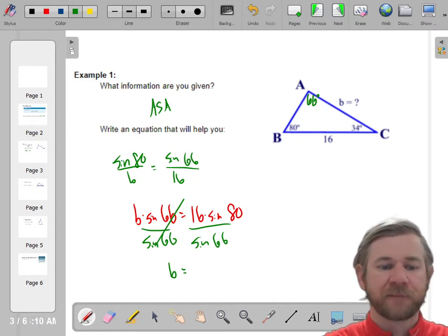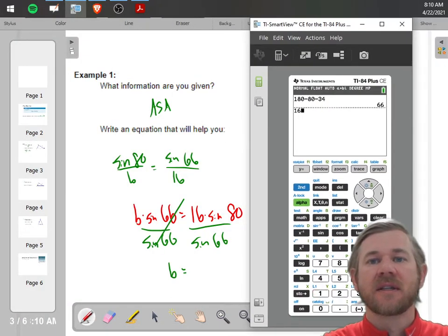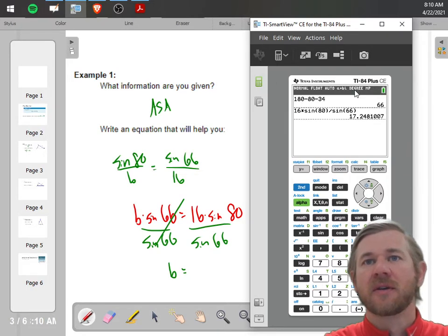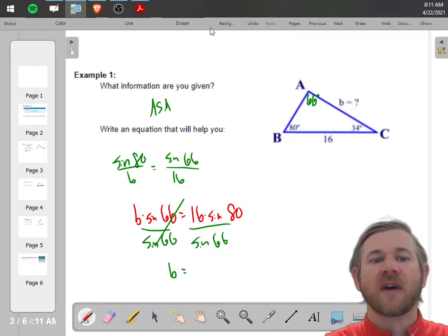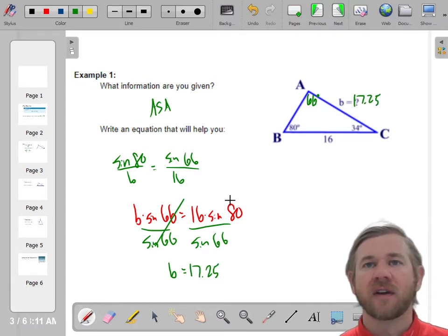So let's use a calculator. And we're going to do 16 times the sine of 80, and then we'll divide by the sine of 66. And we'll get, make sure you're in degrees, 17.25. It doesn't give me decimals. So we'll say 17.25. So this is 17.25.